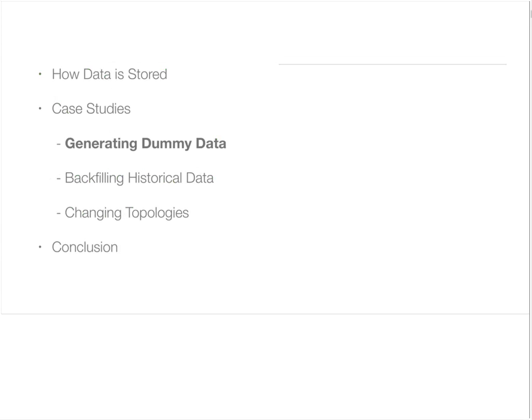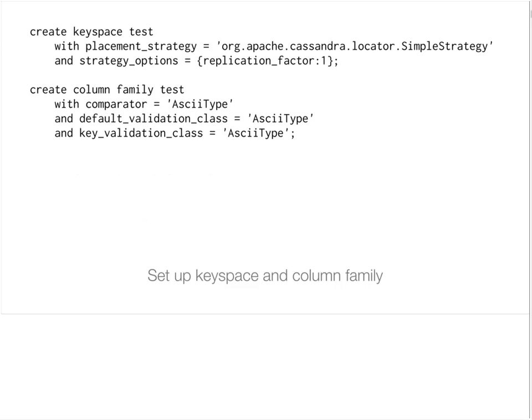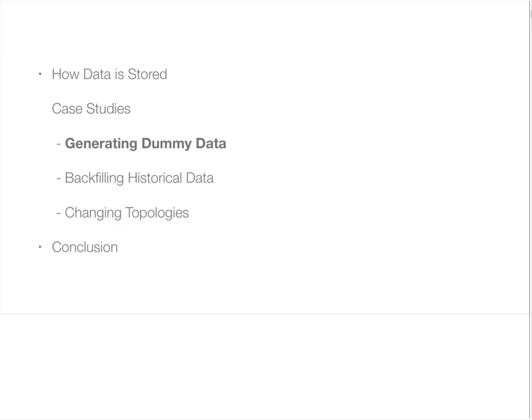Now we'll look at generating dummy data and why you would want to do this. If you have a cluster and you want to test out what your configuration can handle or test certain latencies in your application, a good way is to generate data and fill that into Cassandra. It's often useful to bypass the write path entirely and just load SSTables directly into Cassandra. Each of these examples we're going to look at involves writing out SSTables directly.